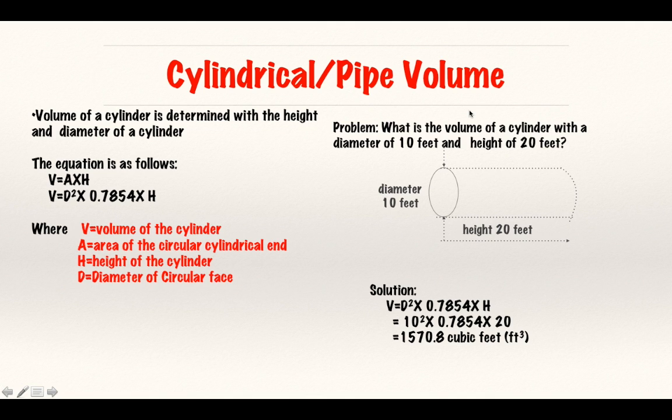What is the volume of a cylinder with a diameter of 10 feet and a height of 20 feet? So, we just plug in our numbers. We get D squared times 0.7854 times the height. So, we multiply all that out and we get 20, multiply everything out and get 1570.8 cubic feet. And that's our answer.